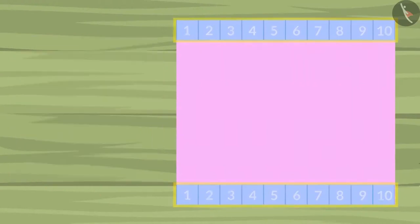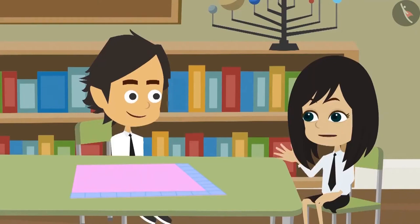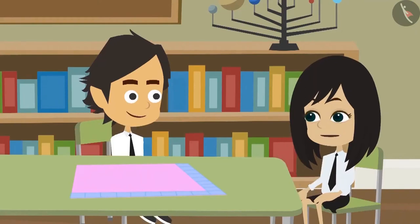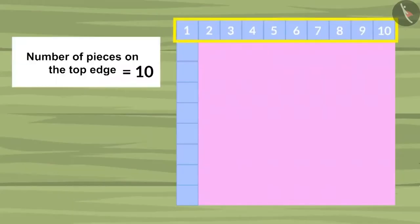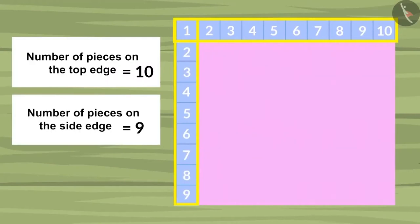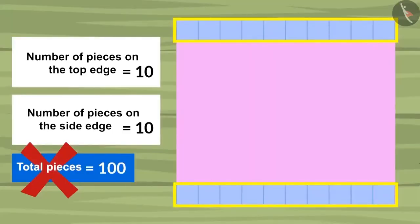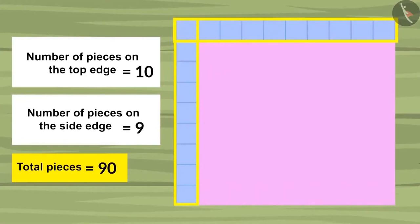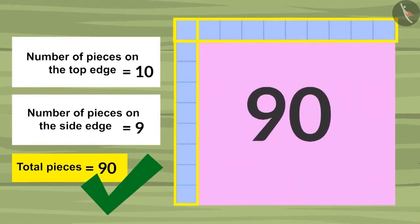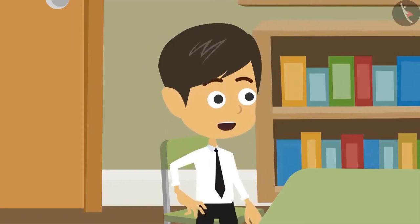To find the correct answer, we have to place the pieces on the top and on the side. I will remove the pieces at the bottom and add pieces to the side. Now let's multiply: ten pieces are placed on the top and nine pieces on the side — multiplying gives 90. The first answer was 100, now the correct answer is 90. So a total of 90 pieces will be required to cover this paper. This method is much better — any shape can be measured with fewer pieces.